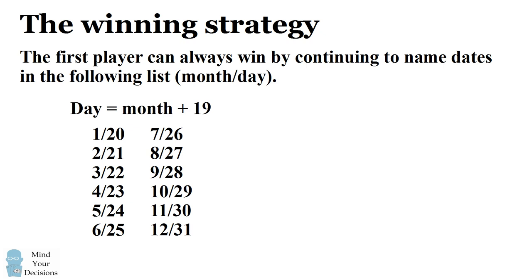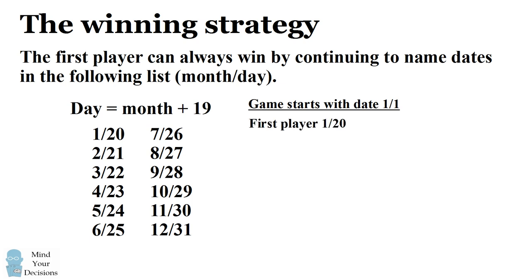So let's see how this plays out. The game starts on January 1. The first player looks for a date in the list, and clearly January 20th works. So the first player says, "I'm going to call out January 20th." Now the second player can either call out another later day in January, or call out another month with the day value of 20. Let's suppose the second player calls out another day in January — January 28th.